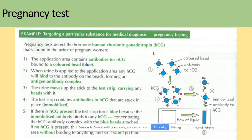Let's have a look at how it works. In the application area, we have antibodies for the HCG hormone bound to colored blue threads. When urine is applied to the application area, any HCG hormone present will bind to this antibody, forming an antigen-antibody complex. This urine then moves up the stick to the test area, carrying those blue threads with it.